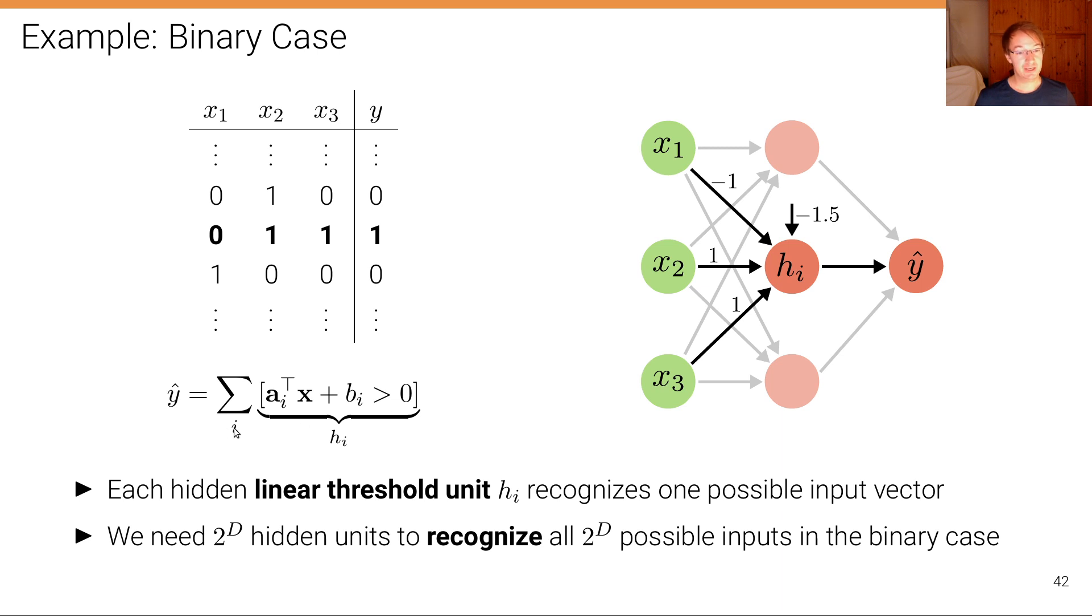And then we use a linear combination of these step functions as our predictor. And the question is: can we formulate parameters a's and b's such that we can represent any possible function?